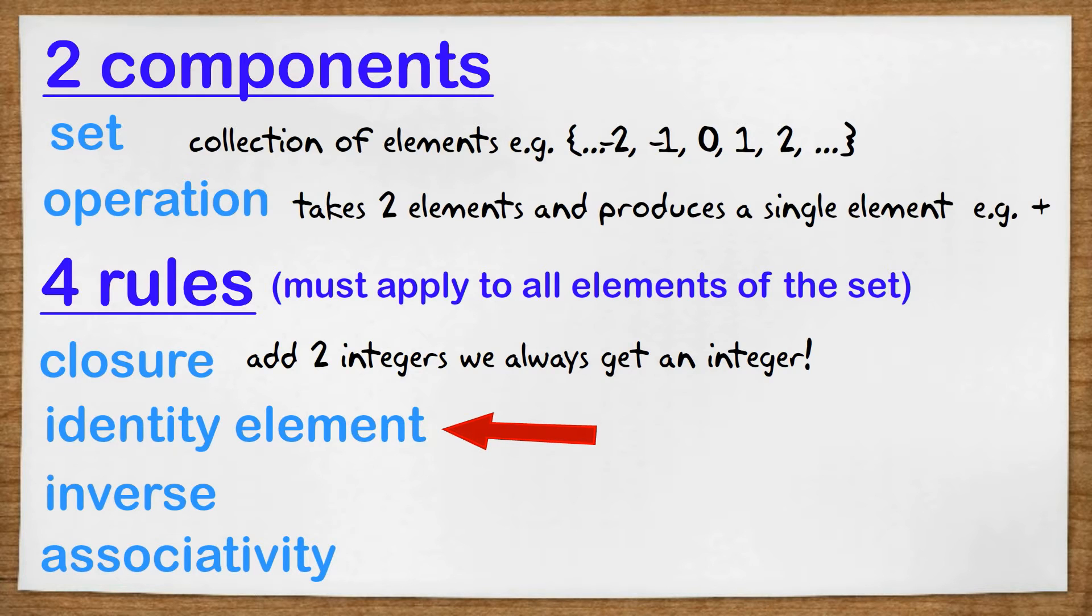The second rule is that there must be an identity element. When you were younger you probably realized that with addition, zero is special because if you add zero it doesn't change the result, and similarly with multiplication, if you multiply by one it doesn't change the result. So with the integers we know that zero is an identity element because five plus zero equals zero plus five equals five.